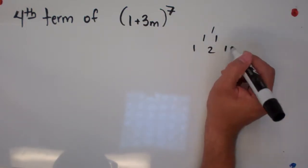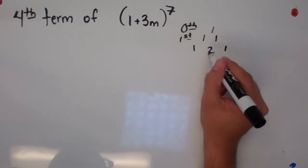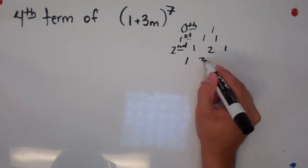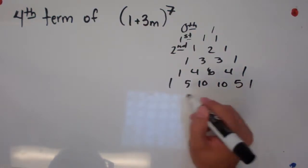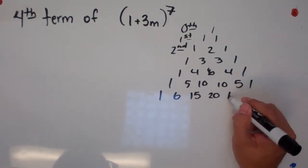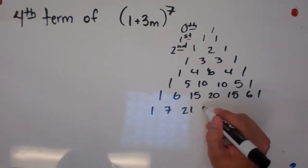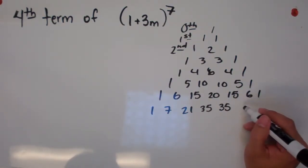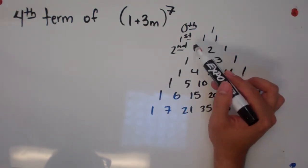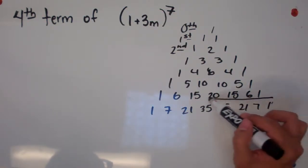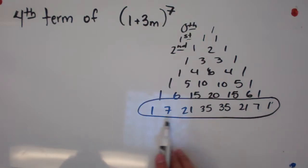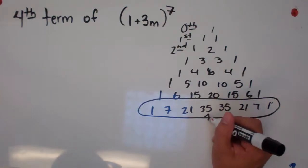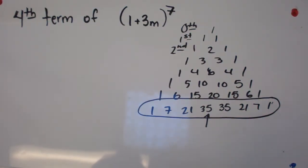Pascal's Triangle rows: one; one one; one two one; then continuing through to the seventh power row, which is the eighth row of the triangle. This gives us eight terms. I want to find the fourth term, so counting: one, two, three — I want to find that fourth entry, whose coefficient will be 35.